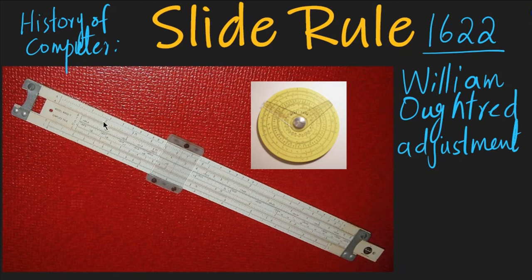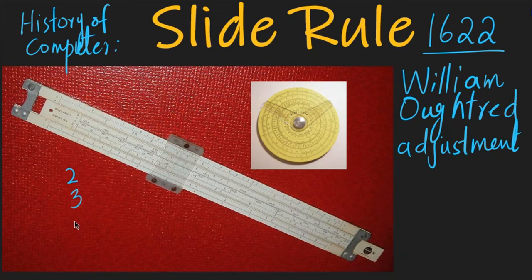The slide rule has different scales — 1, 2, 3, 4, 5, 6 scales — and we can slide these scales. When we set them in a certain way, for example you set two and you set three, and you add them, the next scale will automatically align to 5. So it means 2 plus 3 equals 5.